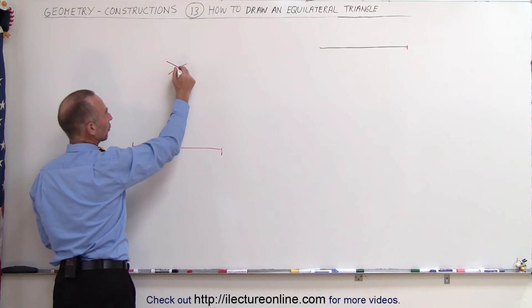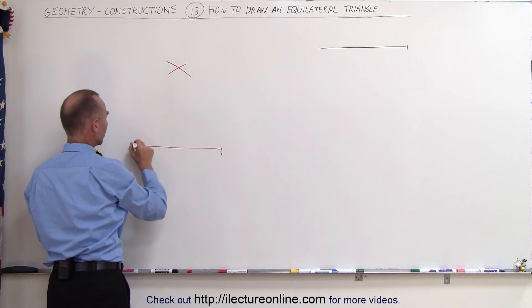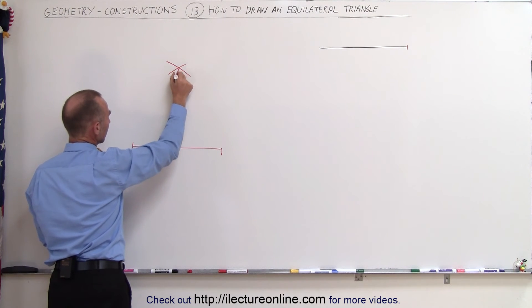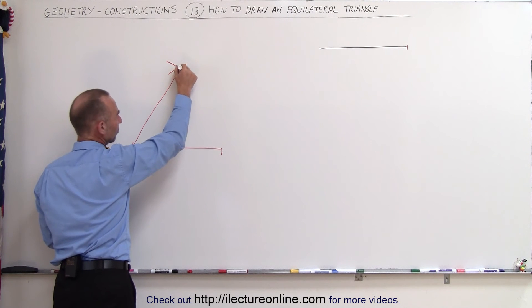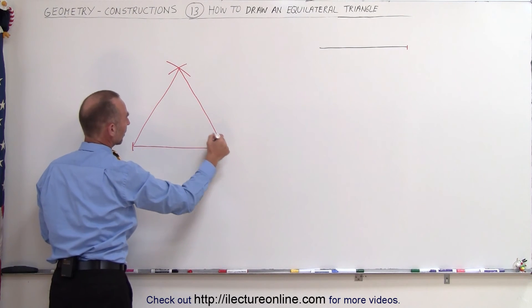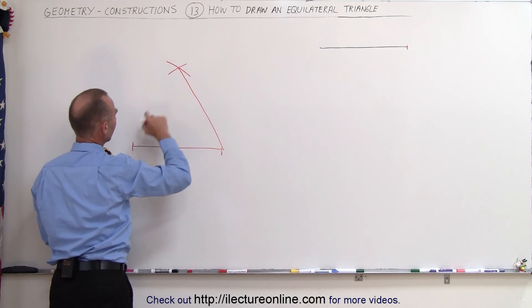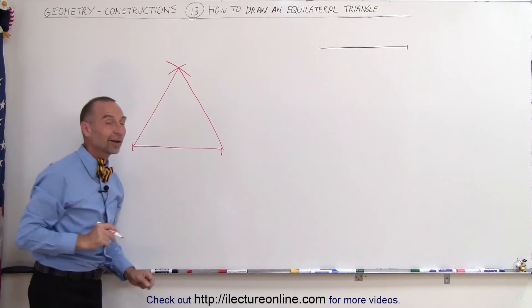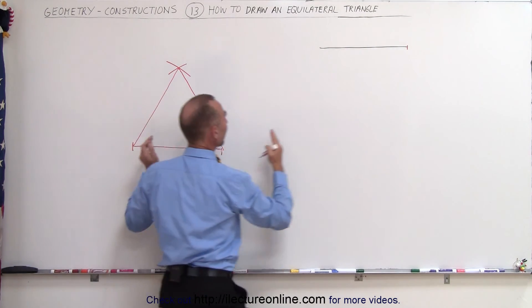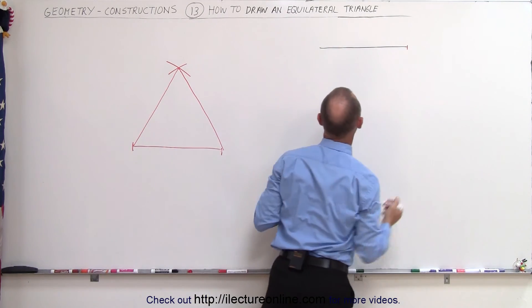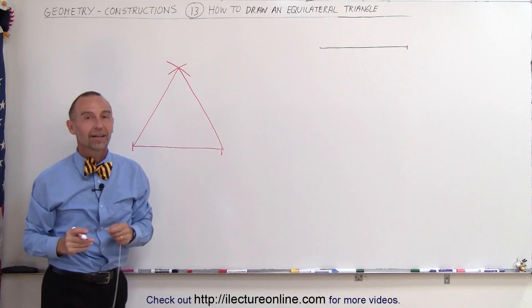So I can connect this corner to the line, and from there to there, not too straight. There we go, let me try this again a little bit better. And there's my equilateral triangle where each side is the exact same length as this line segment right here. That's how we do that.